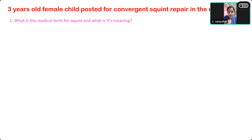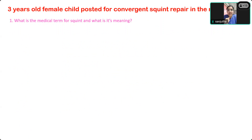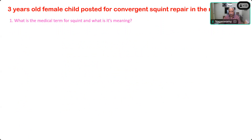Medical term is strabismus. Very good. Strabismus is a visual condition where the gaze is misaligned - the visual axis of the eye are misaligned. So strabismus means malalignment of the visual axis.